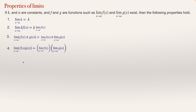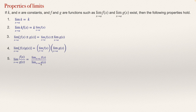Something similar holds for a division — a quotient of two functions. As a fifth property, we have the limit of one function divided by another. We can compute the limit of the numerator divided by the limit of the denominator. Obviously, this can only be done if the limit at the bottom is different from zero.